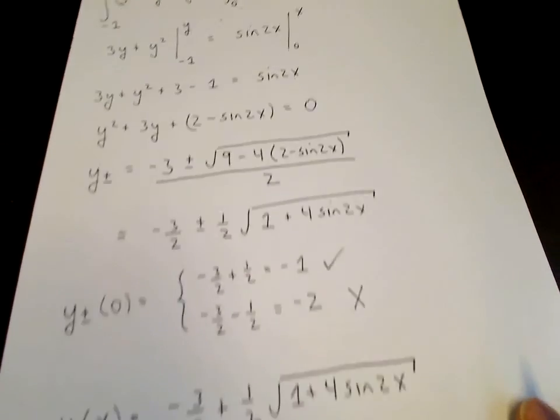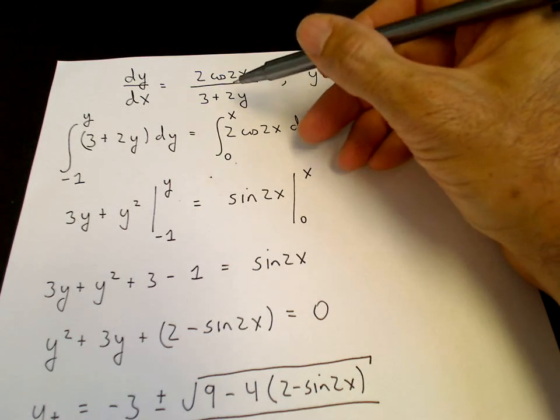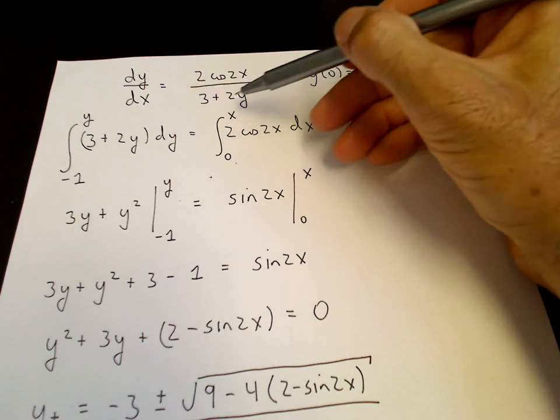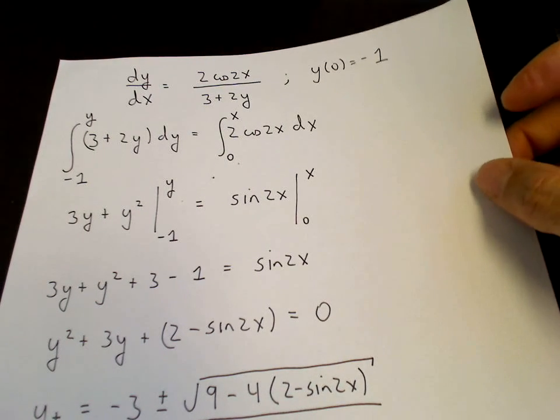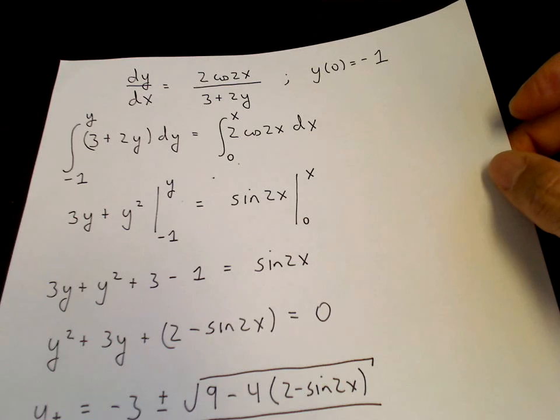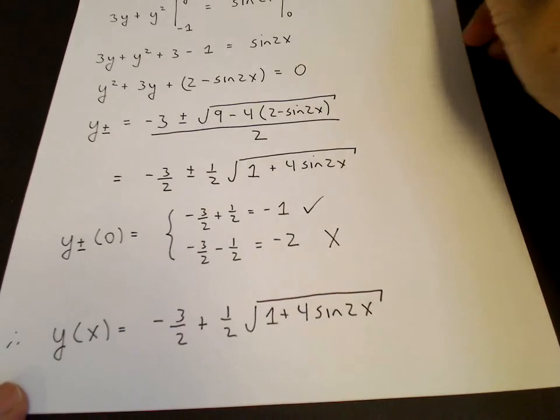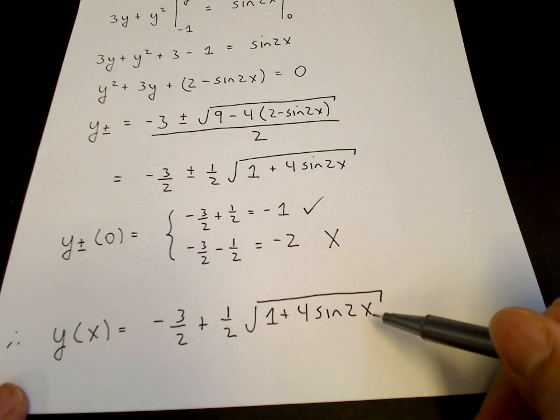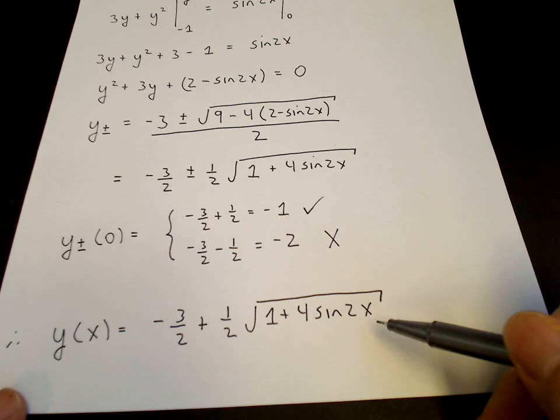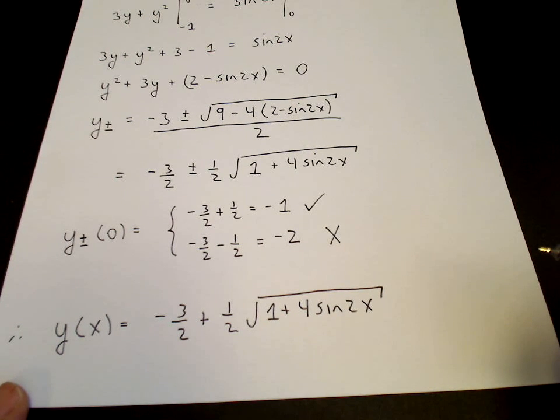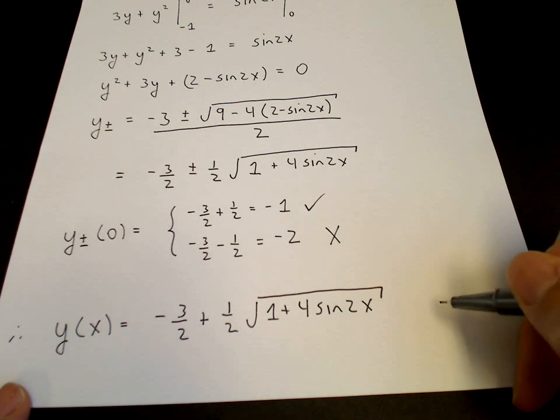What's happening is as the square root vanishes, y becomes minus 3 halves. When y is minus 3 halves, the denominator goes to 0, so dy dx goes to infinity. So the slope of the tangent line to the curve becomes infinite, when the square root turns to 0, becoming negative. And then the solution no longer exists. That's a possible property of a differential equation.